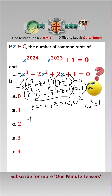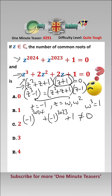Putting minus 1 into our first equation, we get minus 1 to the 2024 plus minus 1 to the 2023 plus 1, which is not 0, so that's not a common root.